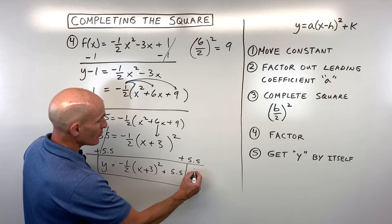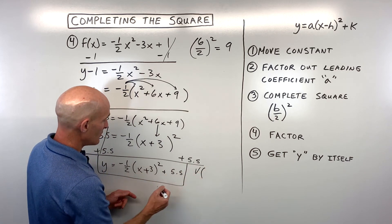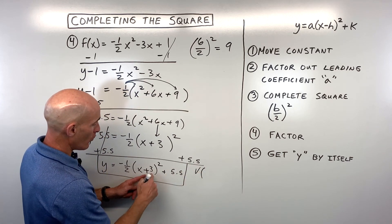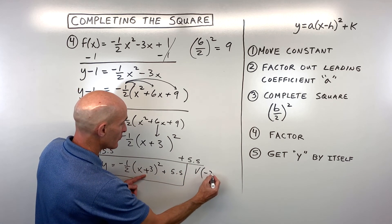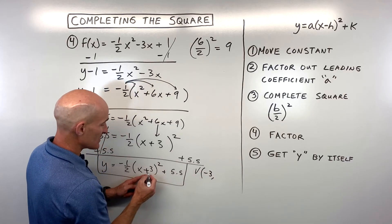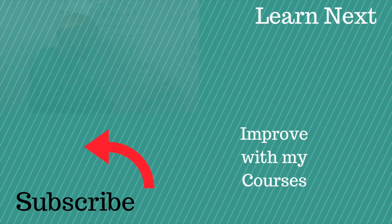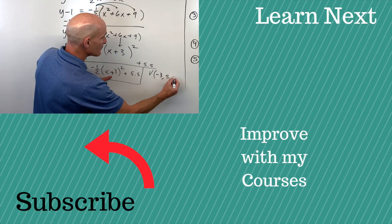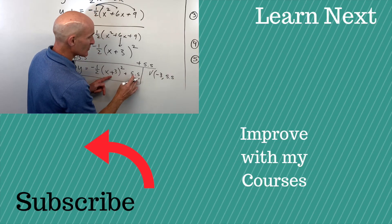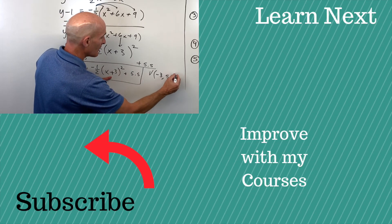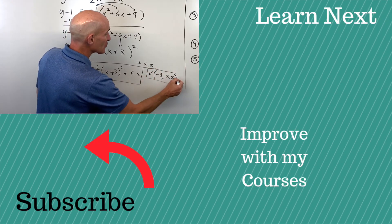Our vertex is going to be at negative three — remember this one's the opposite — and positive 5.5 — remember this one's the same. So the vertex is at negative three, 5.5.